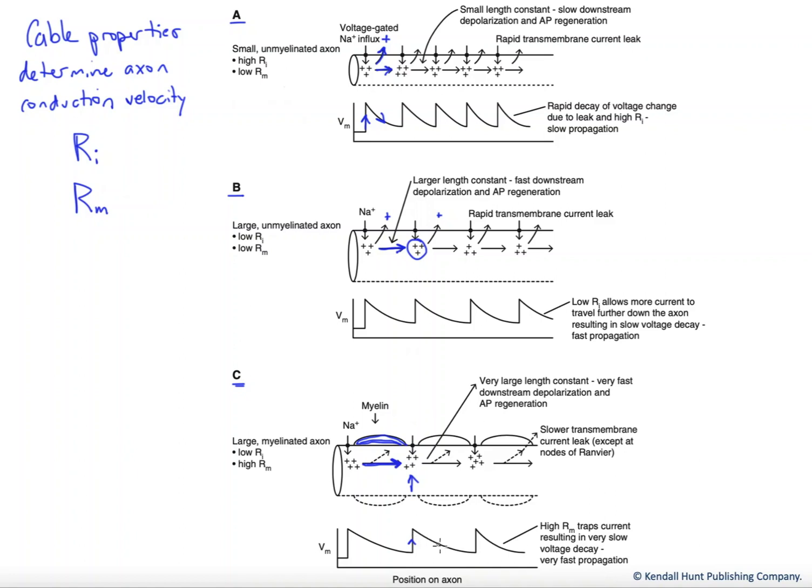But then our signal is going to wane very slowly, make it to the next node where it gets boosted again. And so our myelinated large axons will be the fastest propagating, again, because they have low RI and high RM.